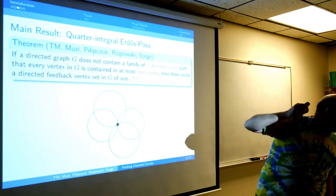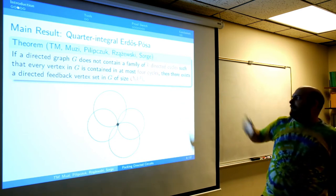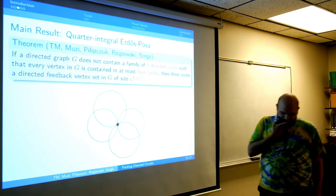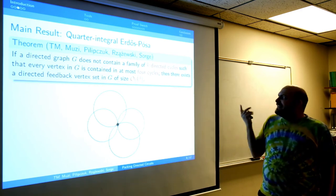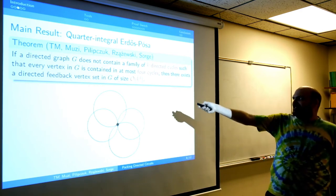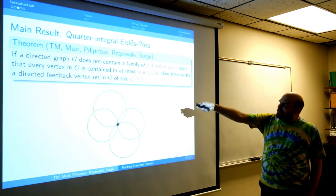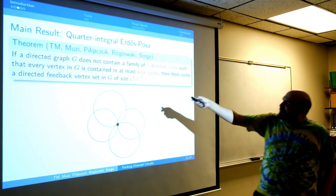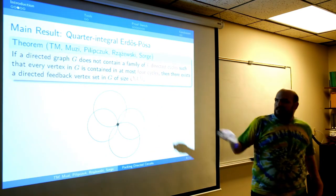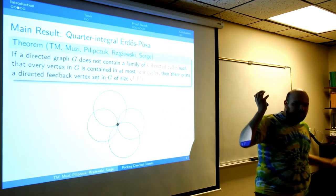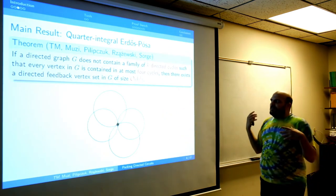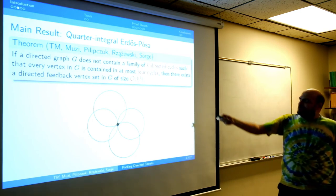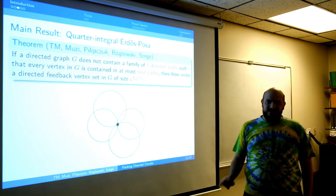Is there a connection between the two fours in the statement? No, there is no direct connection between specifically this four and the exponent four. But perhaps if you allow more overlapping — still constant — you might get a better polynomial. We have some hints for something, but k to the fourth is pretty good already.